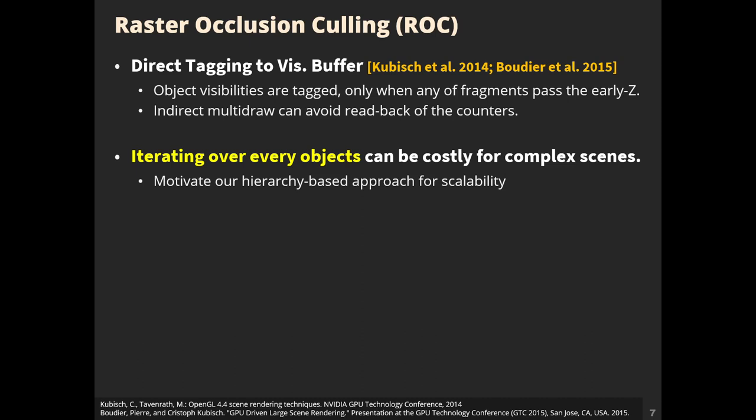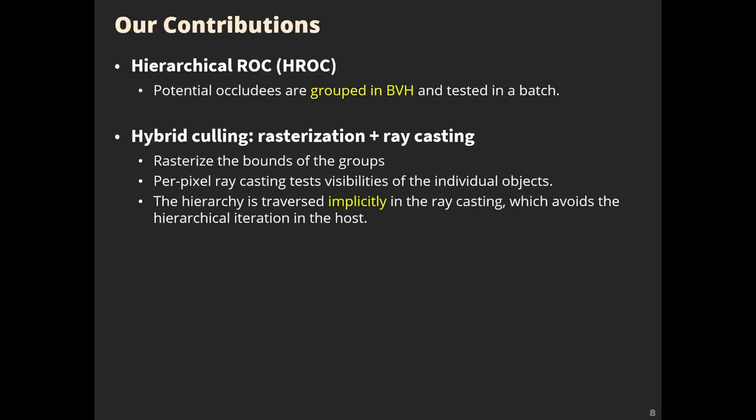This motivates our hierarchy-based approach for scalability — Hierarchical ROC (HROC). We extract the coarsely culled groups using BVH and test visibility in a batch. Our hybrid culling solution rasterizes the bounds of occluded groups and casts per-pixel rays for visibility tests of individual objects. The hierarchy is traversed implicitly in the ray casting, which avoids hierarchical iterations on the host.